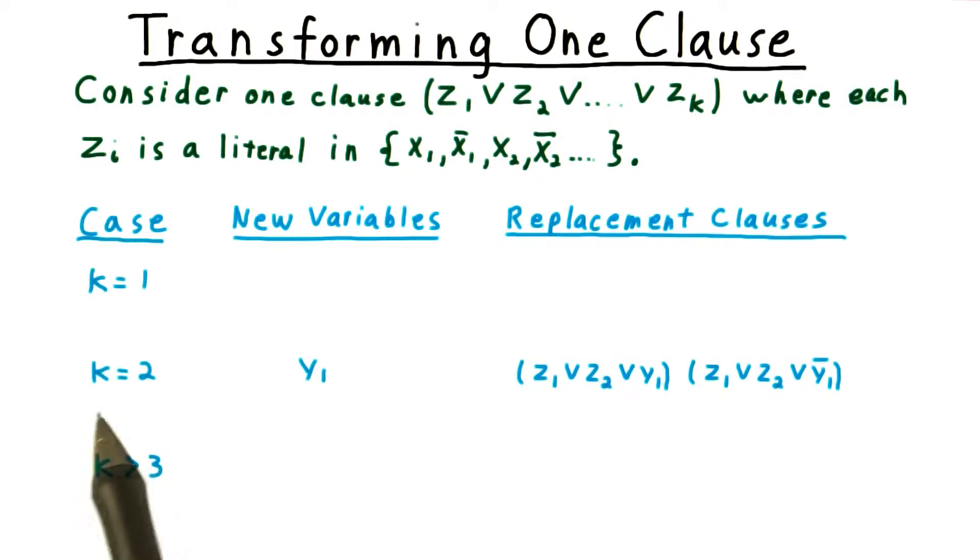When there are two literals in a clause, the situation is easiest to understand. We just need to boost up the number of literals to 3. To do this, we include a single extra variable and trade in the clause Z1 or Z2 for these two clauses here.